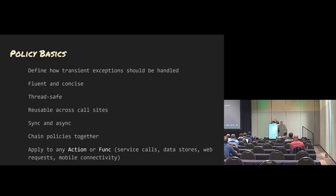The basics: you define how exceptions should be handled — it's fluent and concise. It's thread-safe, asynchronous or synchronous. You can reuse it across call sites — they're just objects. You can chain policies together and apply them to any action or function. Basically any code can be executed within the scope of a policy. There's a great discussion of these resilient patterns in Michael Nygaard's book, Release It, if you're interested in how these things work.